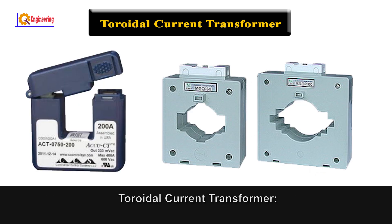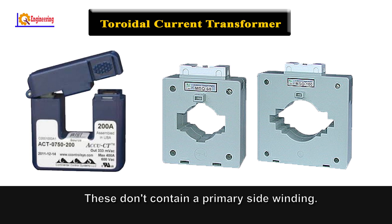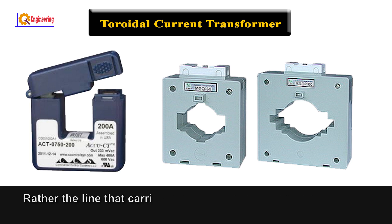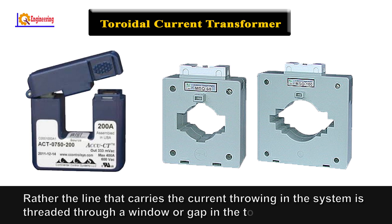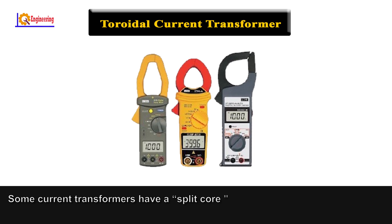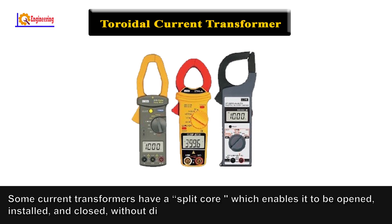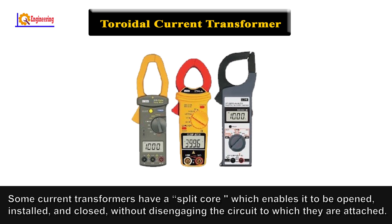Toroidal current transformer: This type does not contain a primary side winding. Rather, the line that carries the current in the system is threaded through a window or gap in the toroidal transformer. Some current transformers have a split core which enables them to be opened, installed, and closed without disengaging the circuit to which they are attached.